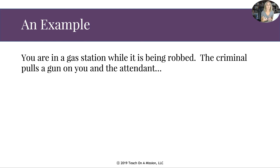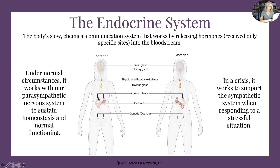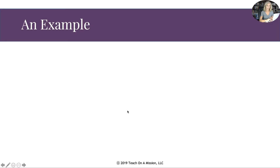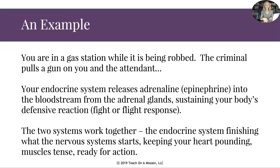Let's look at an example. Let's say you are in a gas station while it's being robbed — that's a stressful situation. The criminal pulls a gun on you and the clerk behind the desk. Your endocrine system will release adrenaline — the technical terms are epinephrine and norepinephrine — into the bloodstream from the adrenal glands. The adrenal glands are the little structures on top of each of your kidneys. This releases epinephrine, hence adrenaline, sustaining your body's defensive reaction of fight or flight, which was started by your sympathetic nervous system. So the two systems really work together here — the endocrine system finishes up what the nervous system starts.